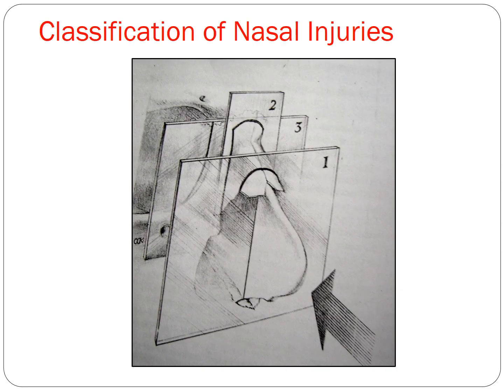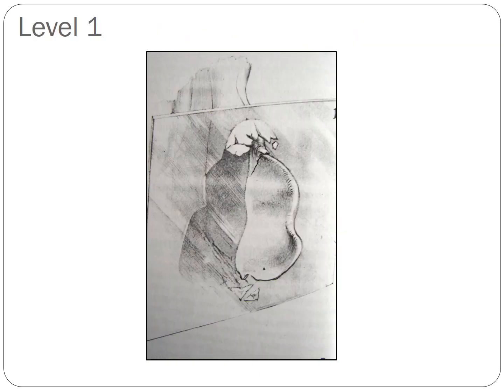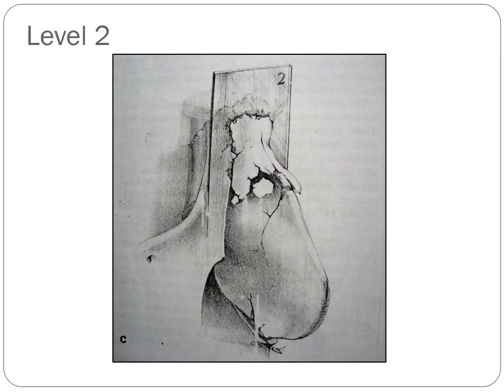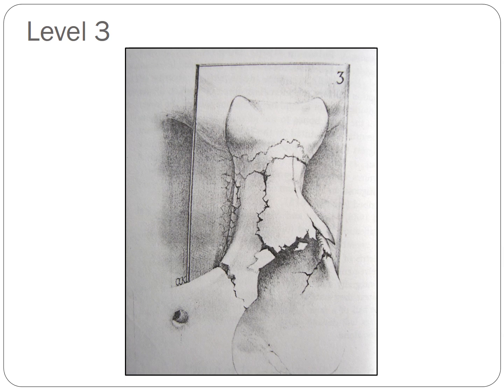Nasal injuries are classified in vertical planes. At level one there is fracture of the cartilage and a small portion of the bony nose. Level two involves fracture of the entire nasal bone including the cartilage. Level three, due to severe trauma, involves not only the nasal bones but also the frontal process of the maxilla and the frontal bone.